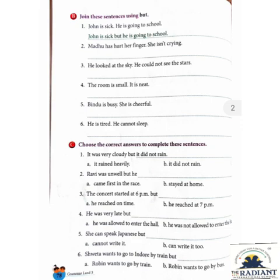Number 5: 'She can speak Japanese but — A. cannot write it, or B. can write it too.' The answer is: 'She can speak Japanese but cannot write it.' Number 6: 'Shweta wants to go to Indore by train but — A. Robin wants to go by train, or B. Robin wants to go by bus.' The answer is: 'Shweta wants to go to Indore by train but Robin wants to go by bus.'